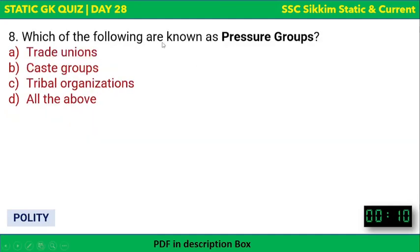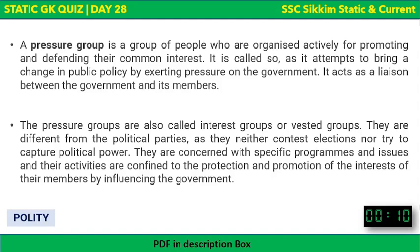Which of the following are known as Pressure Groups? Options: Trade Unions, Caste Groups, Tribal Organizations, or all of the above. Pressure Groups are all of these. It is a group of people organized actively for promoting and defending their common interest. They are called Pressure Groups because they attempt to bring a change in public policy by exerting pressure on the government. They are also called Interest Groups or Vested Groups.